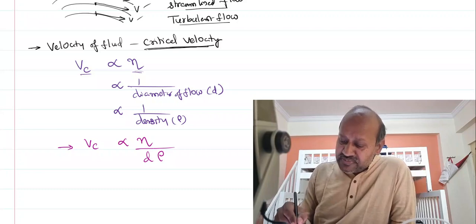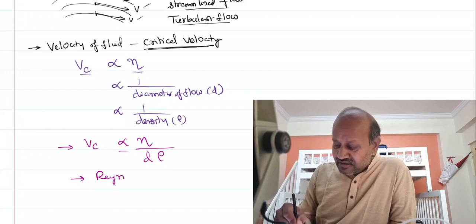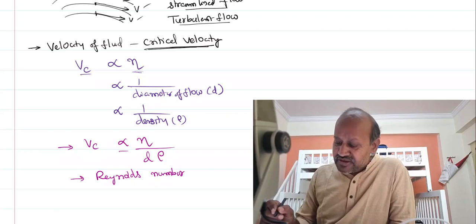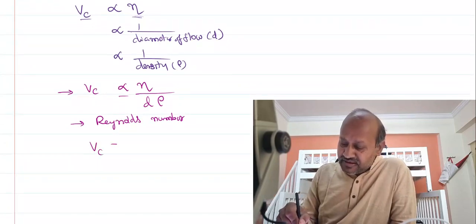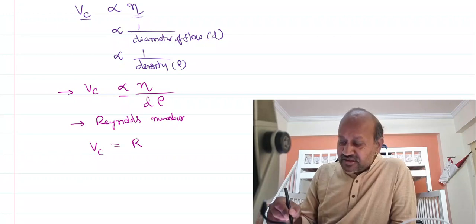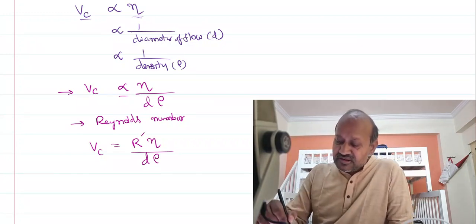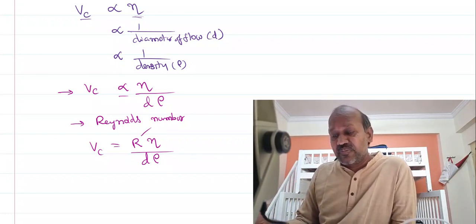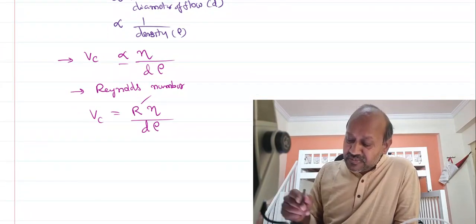To eliminate the proportionality, we introduce a constant called the Reynolds number — an experimentally observed number with no units or dimensions. So we can write: critical velocity = Reynolds number × coefficient of viscosity / (diameter × density of fluid flow). The Reynolds number tells you what kind of flow the fluid has.